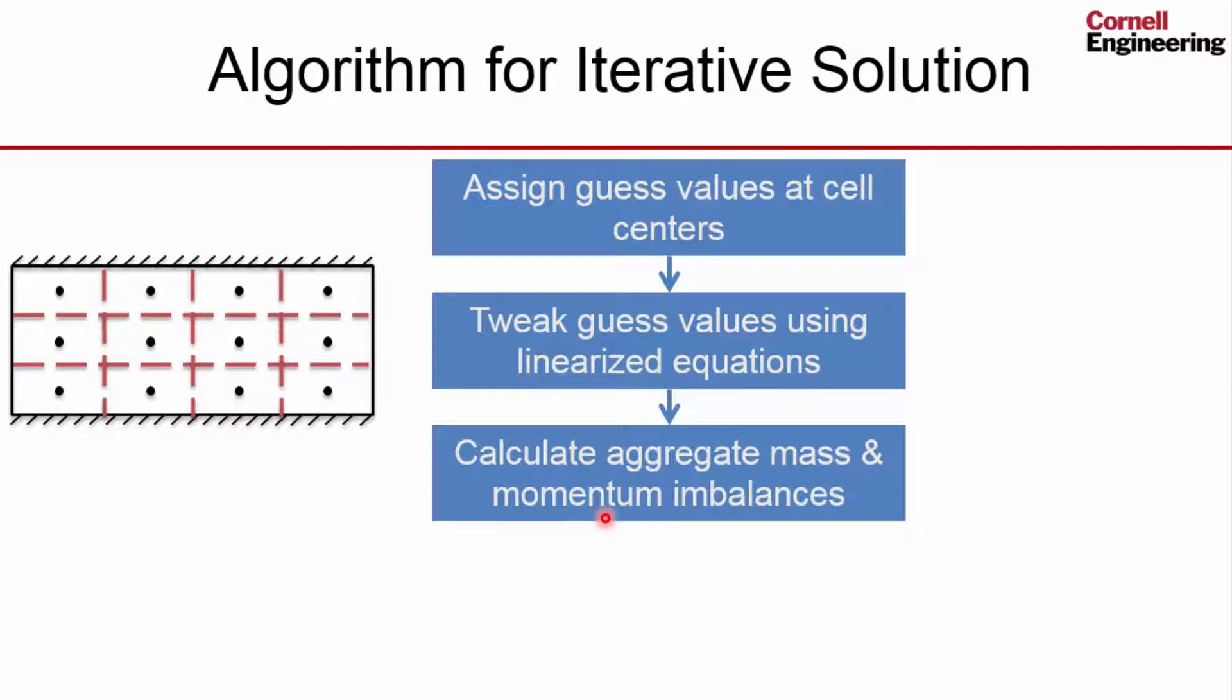And then we check if the aggregate mass and momentum imbalances are less than a tolerance that we specify. And if those imbalances are greater than a tolerance, that means our linearization error is too large. It's not acceptable.